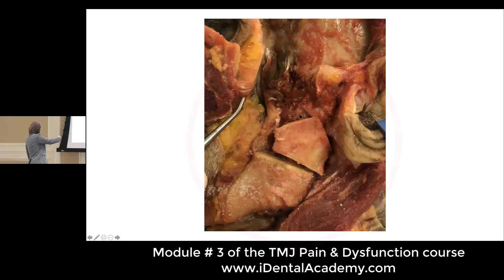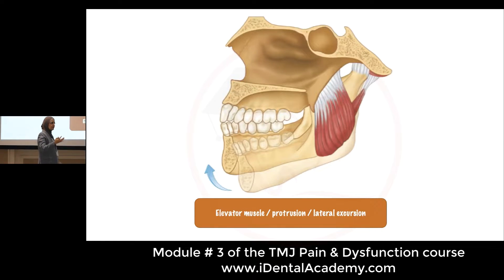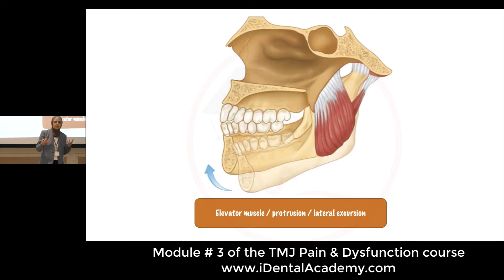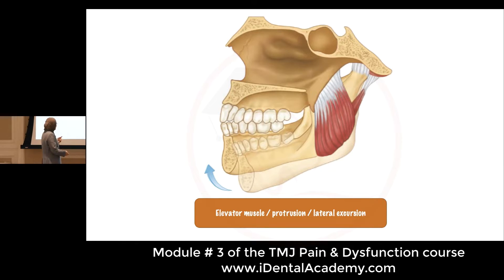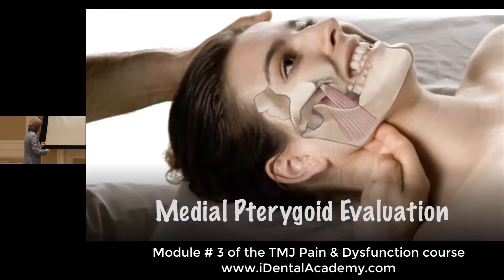What does the medial pterygoid do? It's another elevator muscle. So now we have three elevator muscles — that's why when someone clenches or is a bruxer, they have a lot of muscles to brux with, which is why they damage their teeth. It also helps with protrusion alongside the lateral pterygoid, and also lateral excursion. So it has more than one function, not purely elevation.